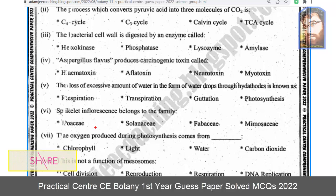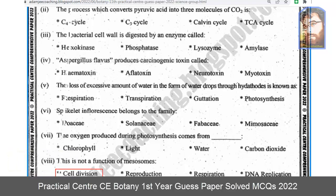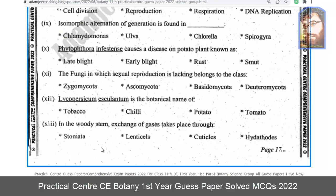Number seven: the oxygen produced during photosynthesis comes from water. Number eight: cell division is not a function of mesosomes. Number nine: isomorphic alternation of generation is found in Ulva.